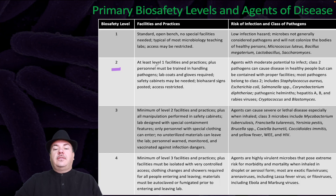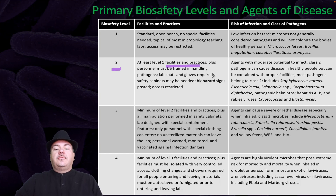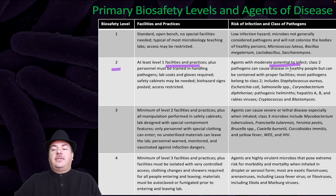Biosafety level two requires at least level one facilities and practices, plus personnel must be trained in handling pathogens. Lab coats and gloves are required; safety cabinets may be needed, and biohazard signs must be posted with restricted access. These include agents with moderate potential to infect. Class two pathogens can cause disease in healthy people but can be contained with proper facilities. Most pathogens belong to class two.